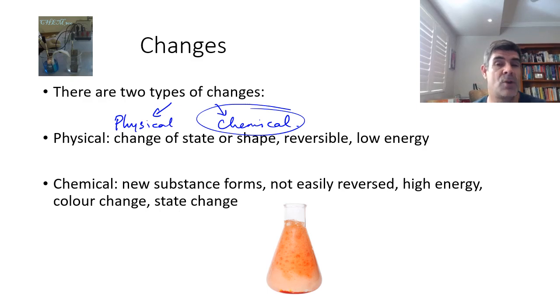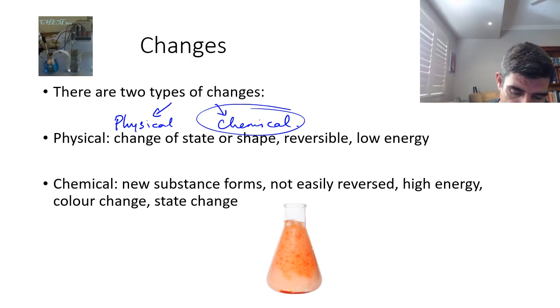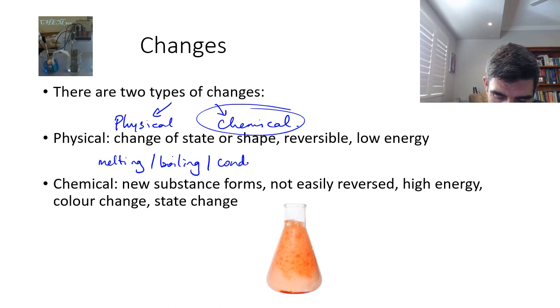But just to quickly review, and I'm sure this is not brand new for most of you, physical changes are changes of state. So they involve things like melting or boiling, condensing and so on. Or where we have particular metals as an example that are malleable, so therefore we can change their shape.